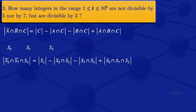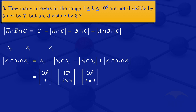For the cardinality of S3 we use the floor value of 1,000,000 divided by 3. For S5 intersection S3, these are numbers divisible by both 5 and 3, so it is the floor of 1,000,000 divided by 15. For S7 intersection S3, divisible by both 7 and 3, it is the floor of 1,000,000 divided by 21. For the last part, numbers divisible by 5, 7 and 3, it is the floor of 1,000,000 divided by 105. Evaluating those floor values gives the result 228,571.